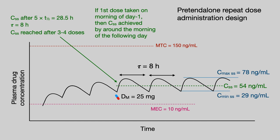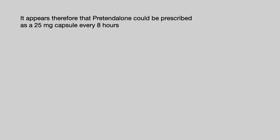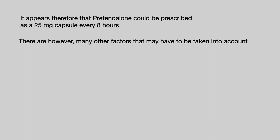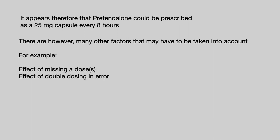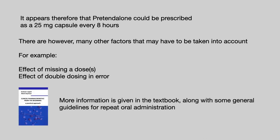The dosing interval is 8 hours, so steady state will be reached after 3 to 4 doses. If the first dose is taken on the morning of day 1, we can expect steady state to be achieved by the morning or noon of the following day — perfectly acceptable for an oral dose regimen. It appears, therefore, that Pretendalone could be prescribed as a 25 milligram capsule every 8 hours.